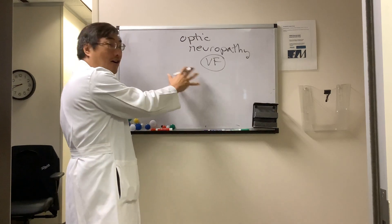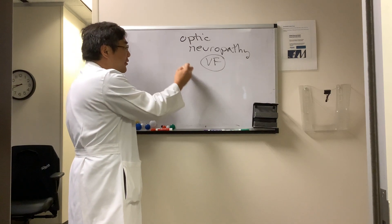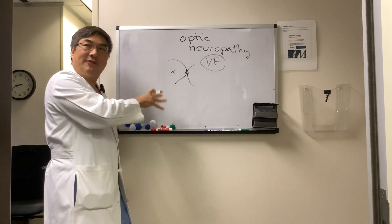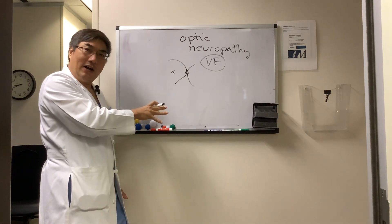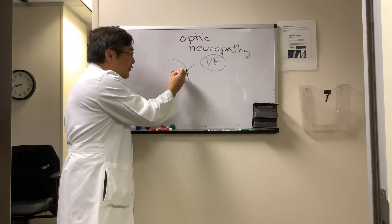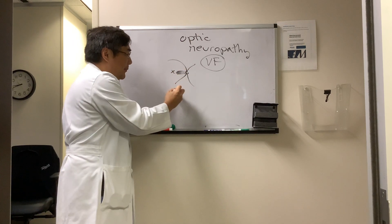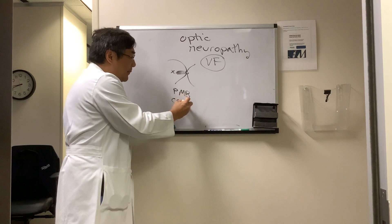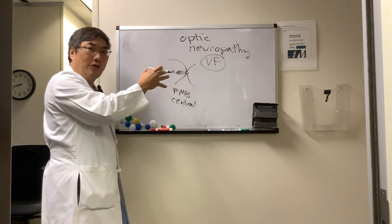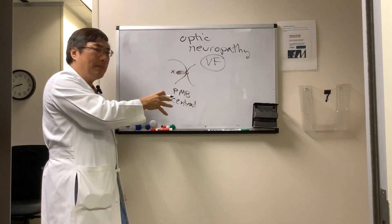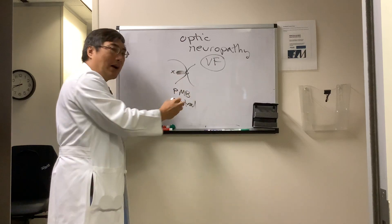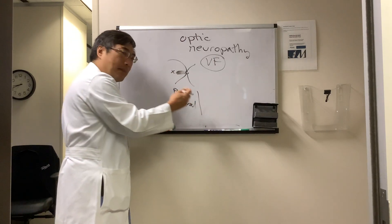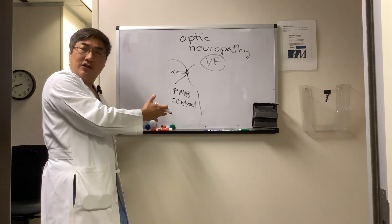However, the long answer is that there are certain types of optic neuropathies that have a predilection for different types of nerve fiber layer problems. The papillomacular bundle, which controls the central vision, is highly metabolically active, and therefore highly metabolically active tissue responds earlier to diseases that affect metabolic activity in that location.